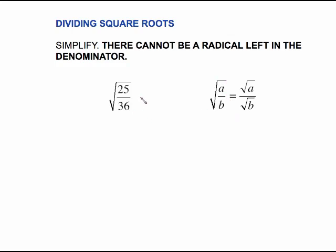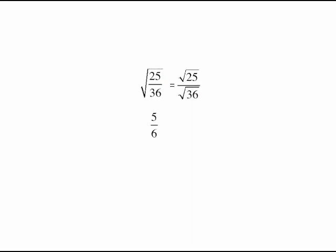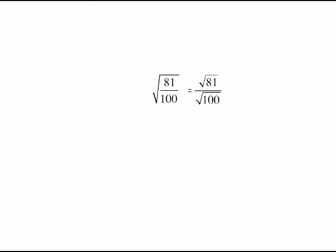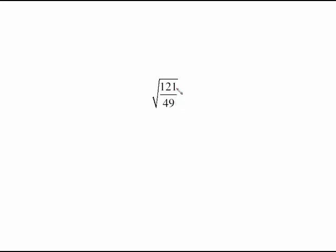In this particular case, it's best to think of it as separate square roots, because the square root of 25 over the square root of 36 very simply becomes 5/6, because 25 and 36 are both perfect squares. Square root of 81 over 100 — think of that as the square root of 81 over the square root of 100. Square root of 81 is 9, square root of 100 is 10. Square root of 121 over 49: square root of 121 is 11, square root of 49 is 7, giving 11/7. If you're more comfortable rewriting it as separate square roots, definitely do that.